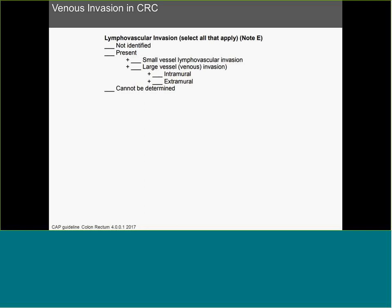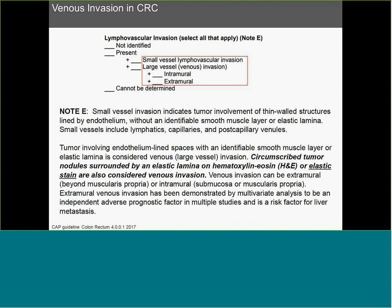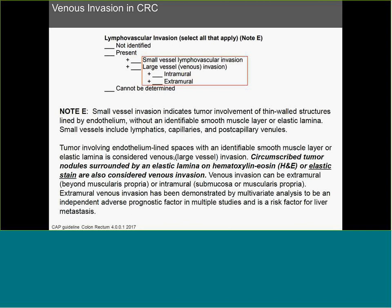Moving on to the importance of venous invasion. Venous invasion in colorectal cancer is very much highlighted in the CAP guidelines and AJCC. We now separate lymphovascular invasion, as since the 7th edition, into small and large vessels. What has changed is that in large vessels we now clearly stipulate whether the invasion is intramural or extramural. The CAP guidelines note that tumor involving endothelial-lined spaces with an identified smooth muscle layer or elastic lamina is considered venous — i.e., large vessel invasion. Subscribed tumor nodules surrounded by an elastic lamina on H&E or elastic stain are also considered venous invasion.